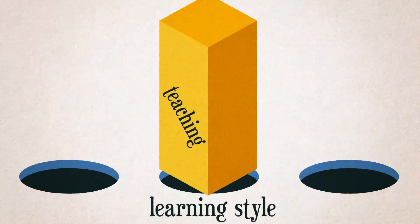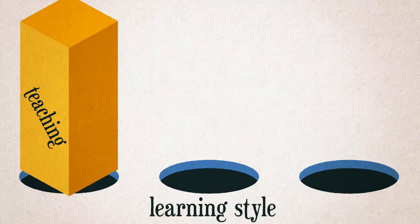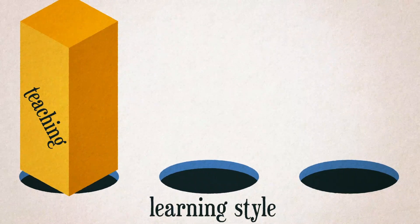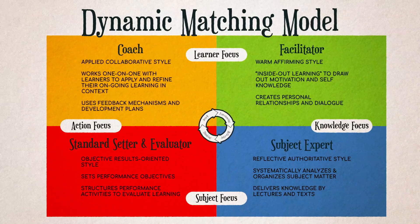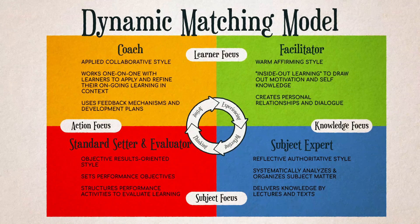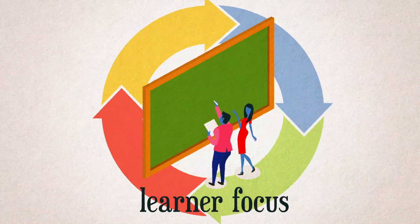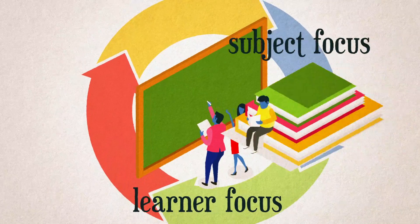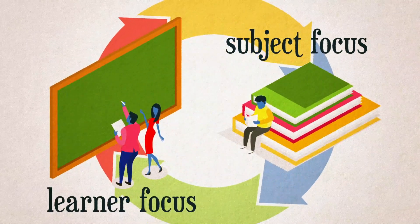The confusion in learning style literature has resulted in the oversimplification that educators should match their teaching style to the learning style of a student. The dynamic matching model of ELT is a more complex but more realistic model for guiding educational practice. In addition to considering the relationship between educator and learner, one must also consider the match of learning approach with the subject matter.